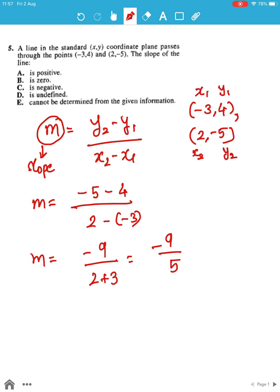Now here the slope is negative -9 by 5. Hence the answer will be C.